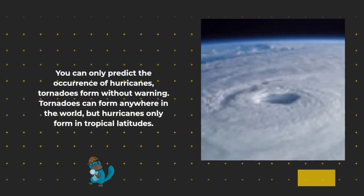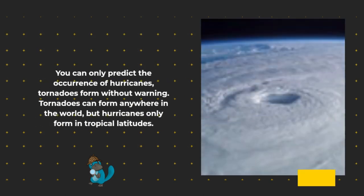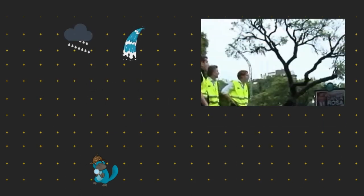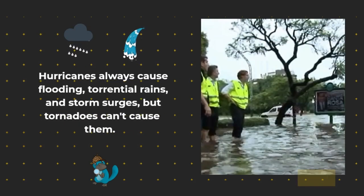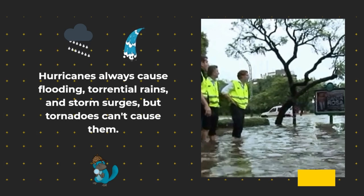You can only predict the occurrence of hurricanes — tornadoes form without warning. Tornadoes can form anywhere in the world, but hurricanes only form in tropical latitudes. Hurricanes always cause flooding, torrential rains, and storm surges, but tornadoes cannot cause them.